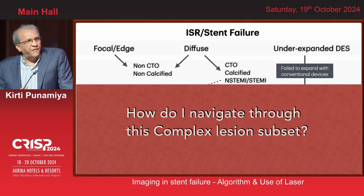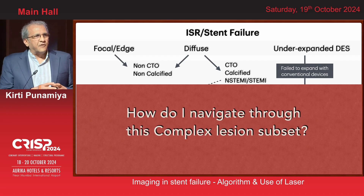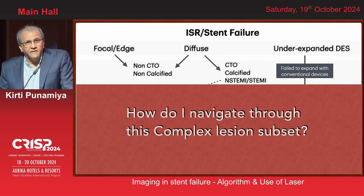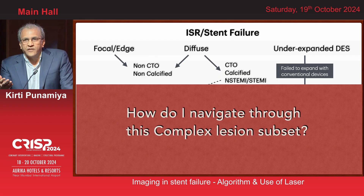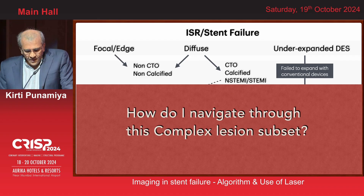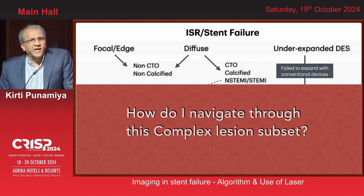When we navigate ISR, we talk about focal, edge, or diffuse. The question is: is it a CTO or non-CTO, is there calcium? This is what differentiates one from the other. On the far right is the underexpanded stent — which could be right in the realms of an acute angioplasty where you can't expand the stent, or an underexpanded stent presenting as ISR or stent failure recognized as a problem. I'll break up this complex, heterogeneous subset in what I think is a very simplistic approach.